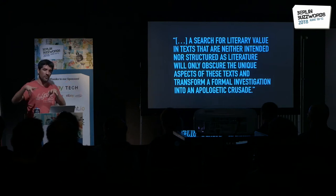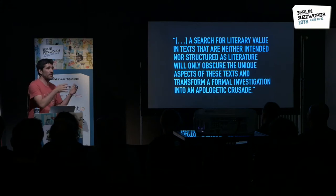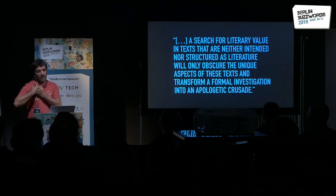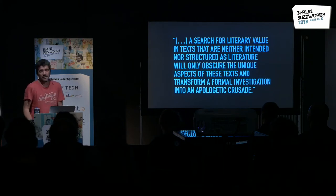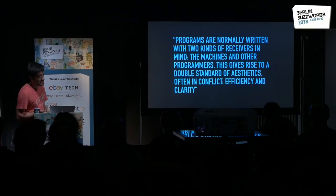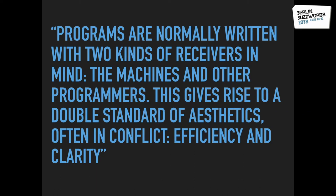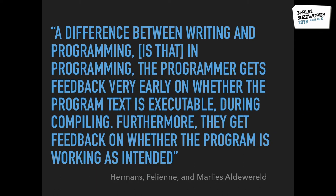What I care about is how we, as programmers working in a team, manage to share knowledge between ourselves — that this program needs to fulfill a very human-specific task. Maybe sort users from a database, parse a web form, implement an index for a database. Programs are normally written with two kinds of receivers in mind: machines and other programmers. This gives rise to a double standard of aesthetics, often in conflict: efficiency and clarity.